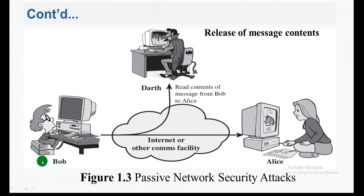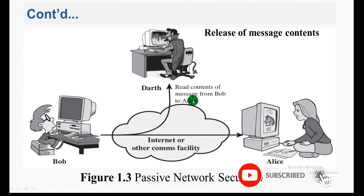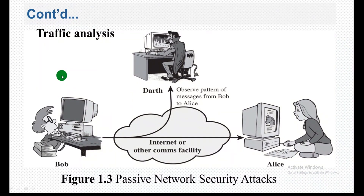As you have seen here, data is sent from Bob to Alice. In the release of message content attack, the passive attacker reads the content of the message from Bob to Alice. This is the first type of passive attack.